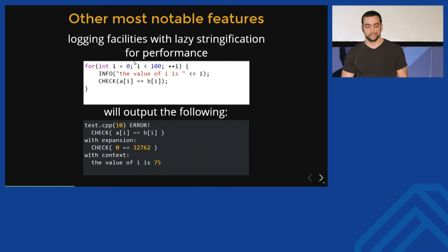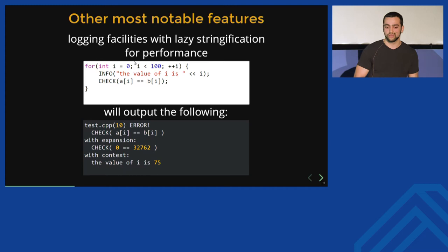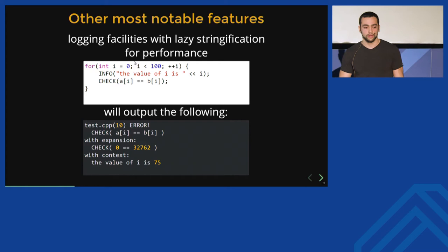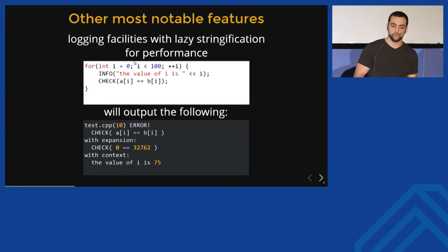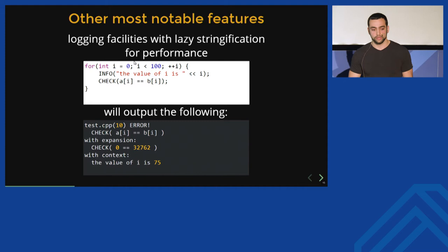There are also logging facilities. For example, if we are comparing elements of two arrays and some are not equal, we would like to have some context — in this case the counter `i`. What's special about Doctest's logging facilities is that the string is not constructed unless it's needed, so there are no allocations if the assertion doesn't fail. It has lazy stringification of the INFO call. If the assertion failed, we get output like 'with context: the value of i is 75'.